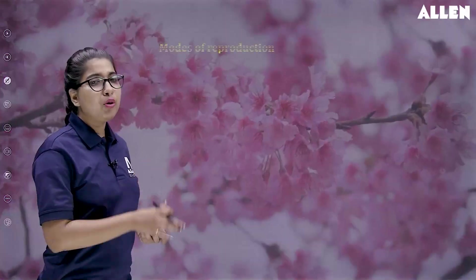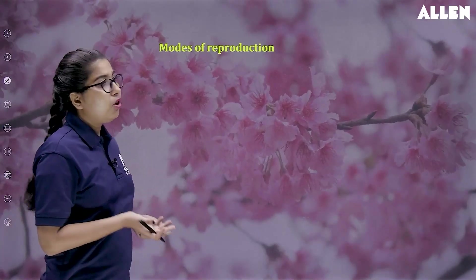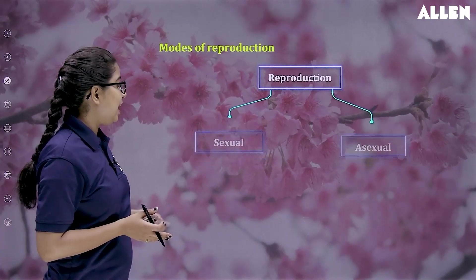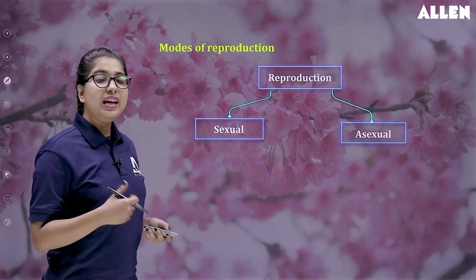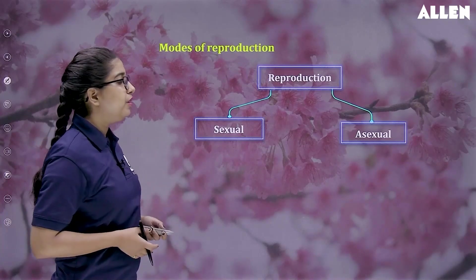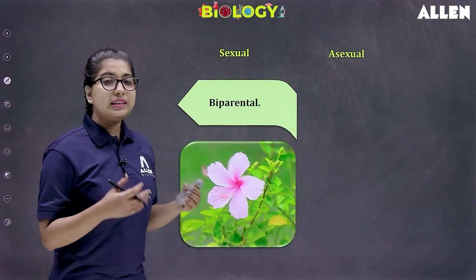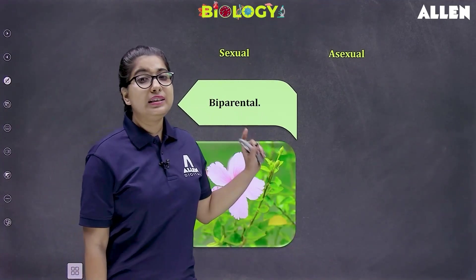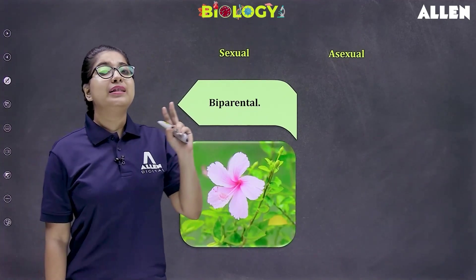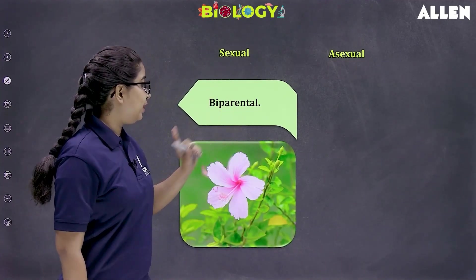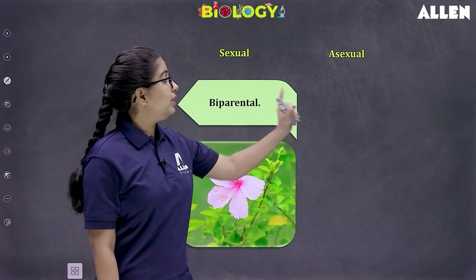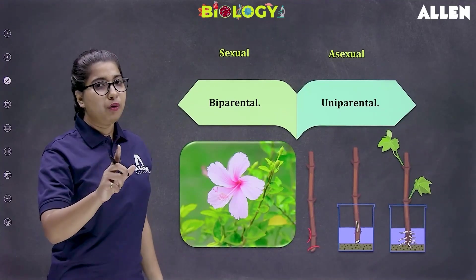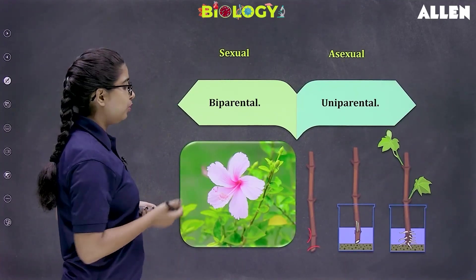Reproduction is further of two modes. We have two modes of reproduction. Number one, we have the sexual mode of reproduction, and number two, we have the asexual mode of reproduction. In the sexual mode of reproduction, it is biparental — two parents are involved. Whereas in the asexual mode, it is uniparental — there is only one parent involved in this mode of reproduction.